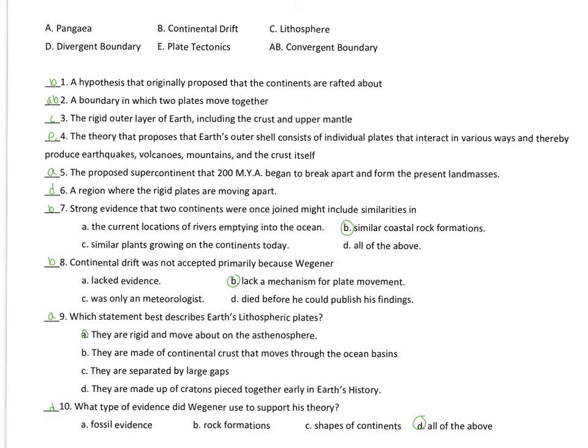The proposed supercontinent that 200 million years ago began to break apart and form the present landmass. That's going to be Pangea. Remember, all the continents were sutured together. The U.S. was actually, or North America was actually sitting down over the equator at that time, and then it started to break up. That's actually where we got the Atlantic Ocean from.